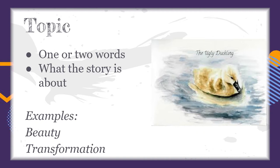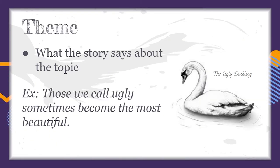Topic is a great place to start. Theme is sort of taking that one step deeper. When you're telling about theme, you're telling what the story says about that topic. So if the topic of the poem or the story was beauty, the theme could be: those we call ugly sometimes become the most beautiful. Or maybe that poem is about aging and getting older, but the theme goes a little bit deeper, and it's talking about how getting older can bring really great things into life, but it can also be a little bit scary.